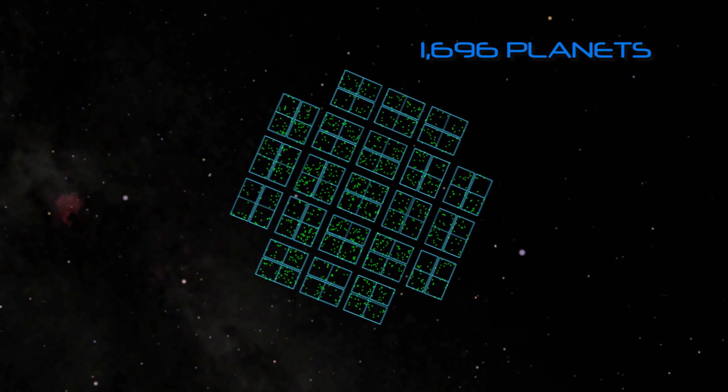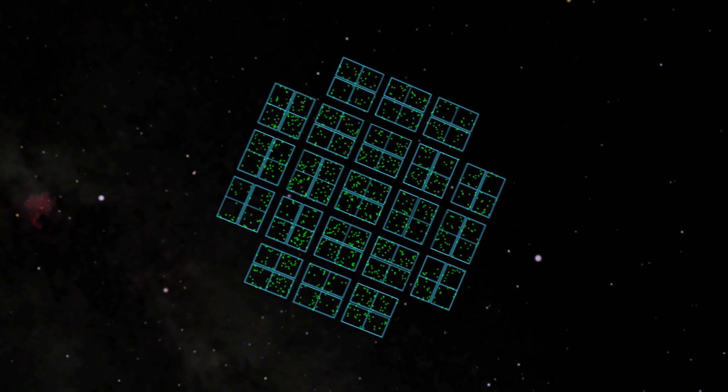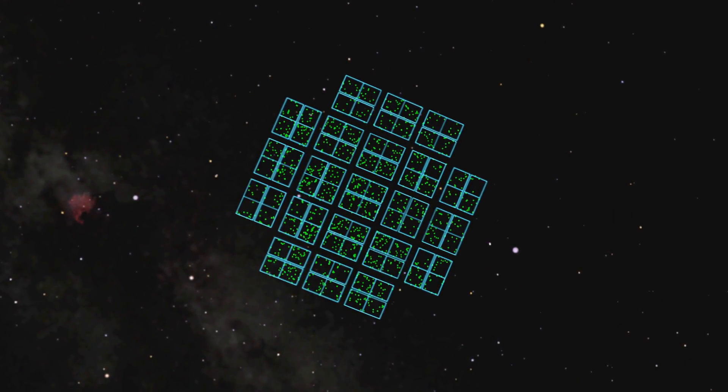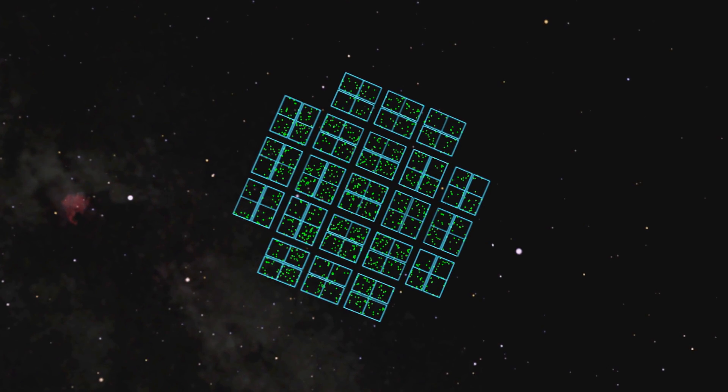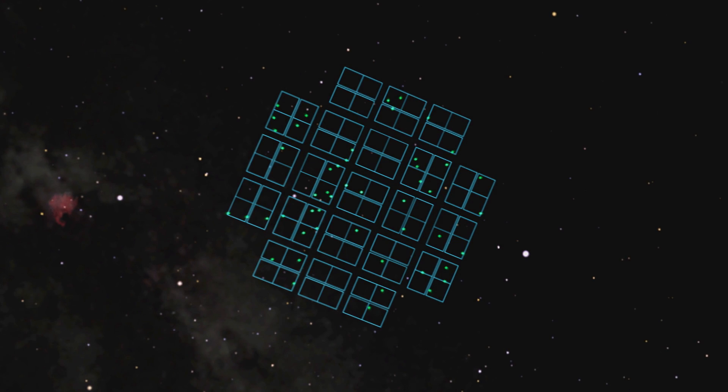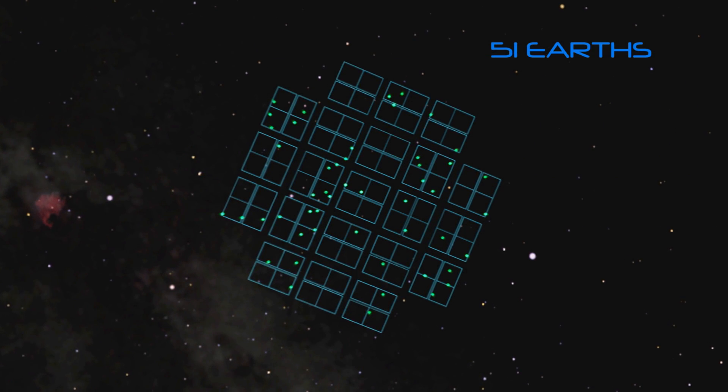Now, the remaining planets are the right size, but not all of them would make a good home. For life as we know it to exist, you need liquid water. We can't determine a planet's composition from the data yet, but we can see whether a planet seems to orbit in the habitable zone around its home star. This is our best estimate for the number of potentially life-bearing worlds among the planets spotted by Kepler.